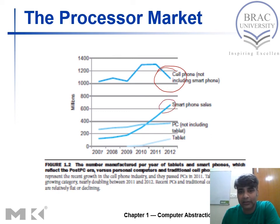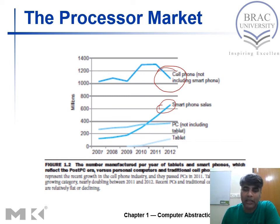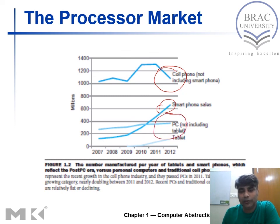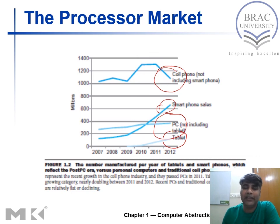The smartphone market is growing due to the fact that prices have come down dramatically. Now you can have a smartphone for only a few thousand Taka, which wasn't the case around five years back when smartphones were really expensive. The PC market is kind of flat and will remain flat. Also note that this does not include the tablet market, which is gaining.